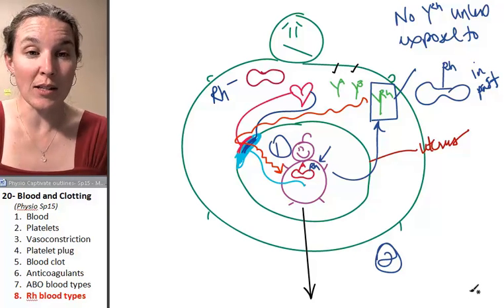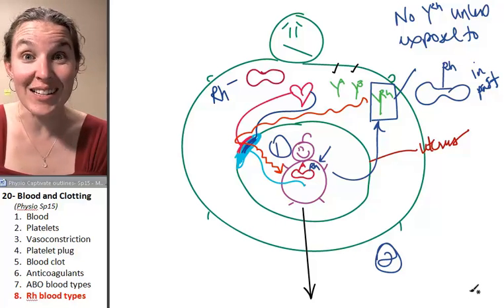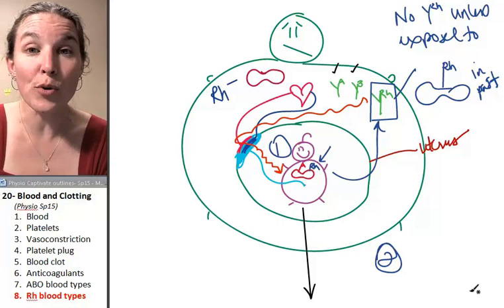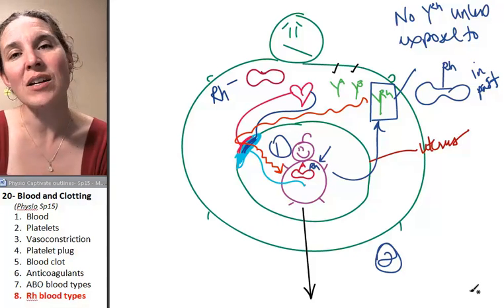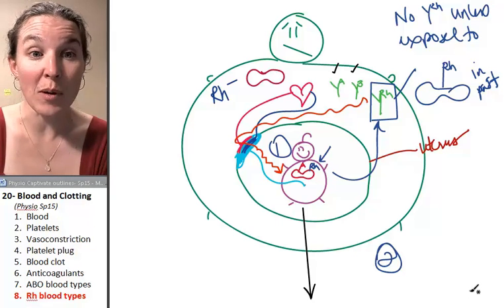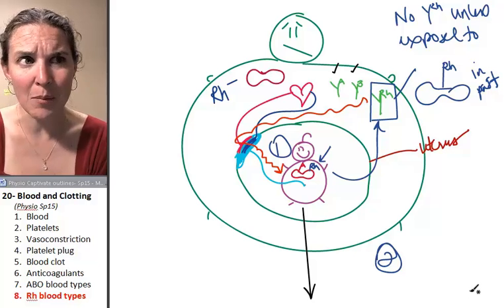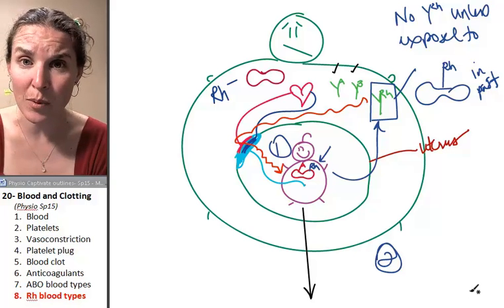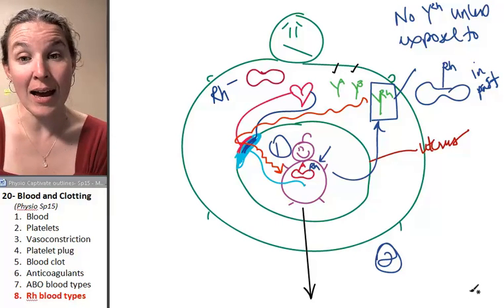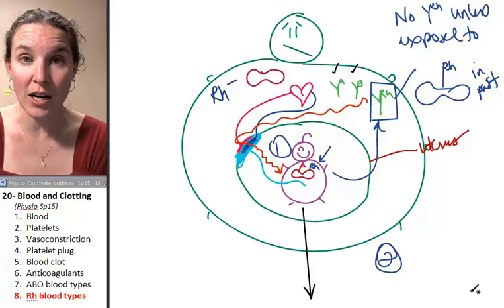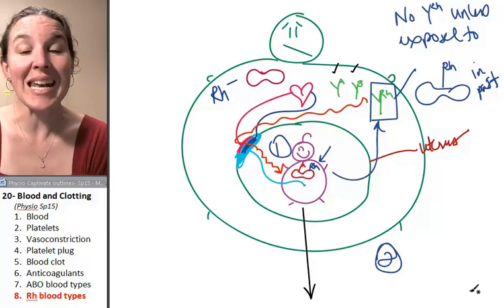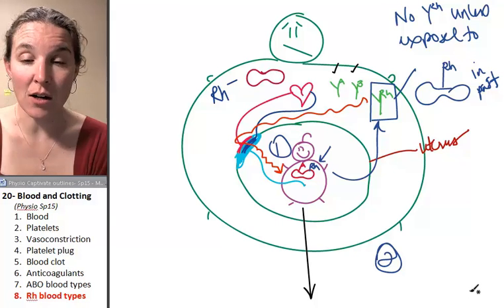One such medicine is called RoGAM and it prevents your immune system from producing those antibodies. As long as you don't ever produce them, you won't ever attack your baby and you won't ever produce them unless you're exposed to the baby's blood. If you give birth in any method, really the first baby is the only one that has a chance at survival if RH factors don't match, if the RH negative mama has an RH positive baby.